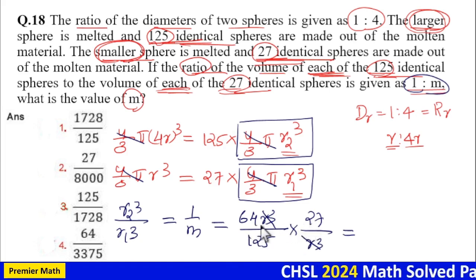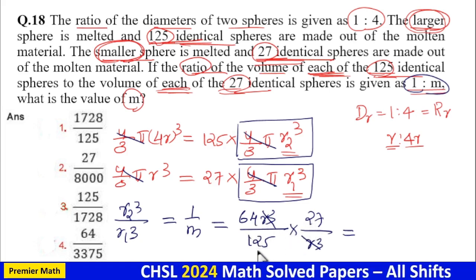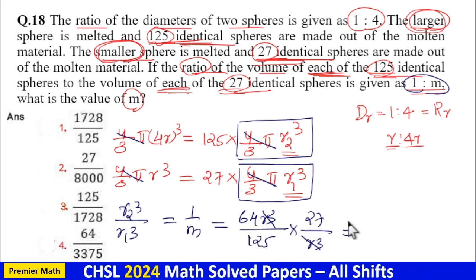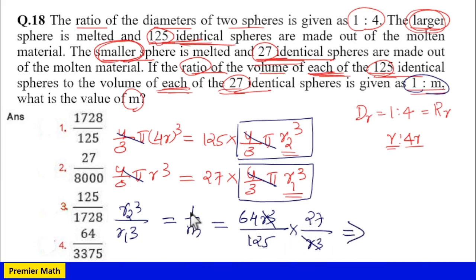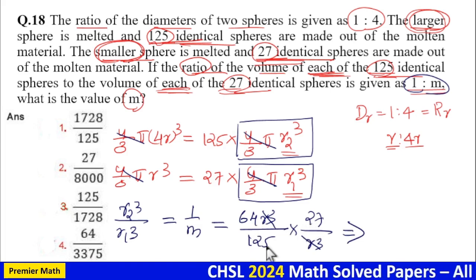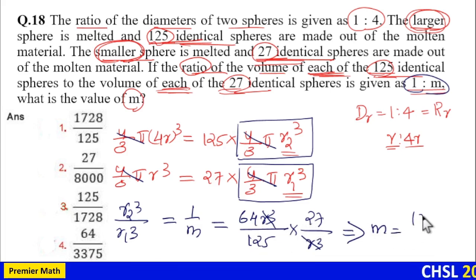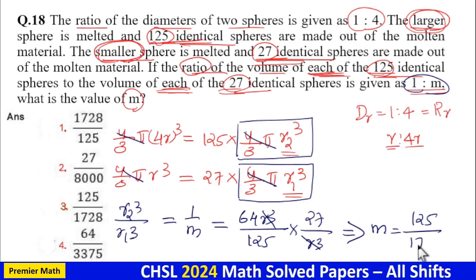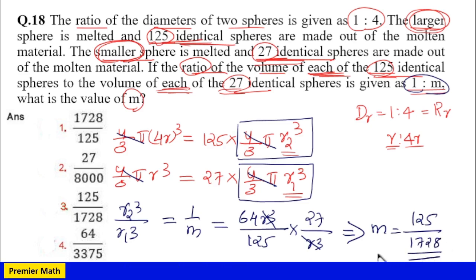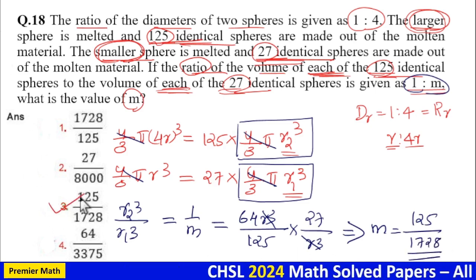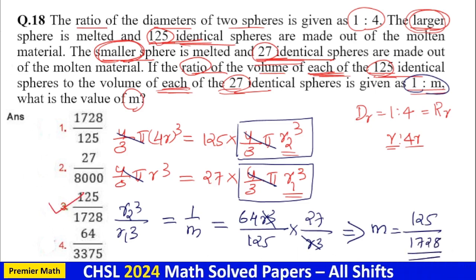Our answer is 1728/125. Since 1:m = 1728:125, m is equal to 125/1728. So option 3 is the answer.